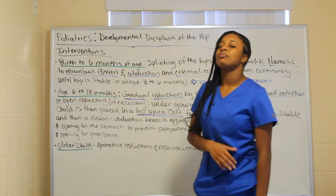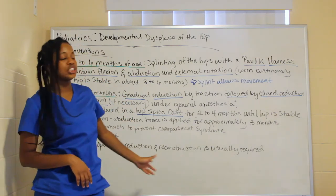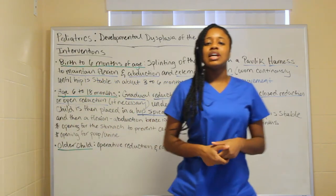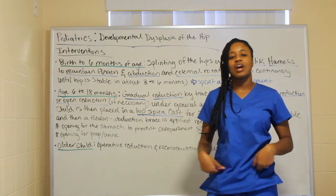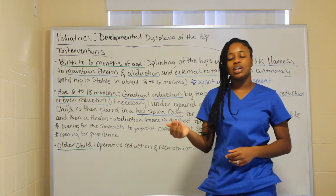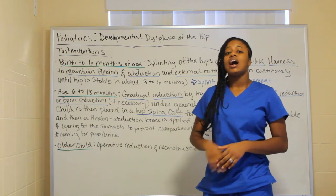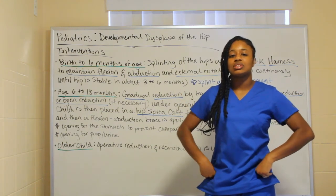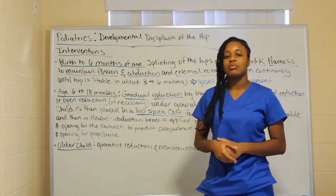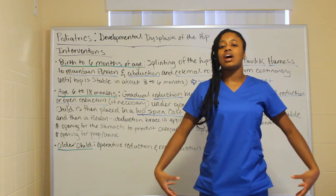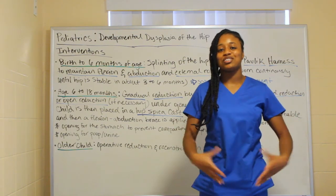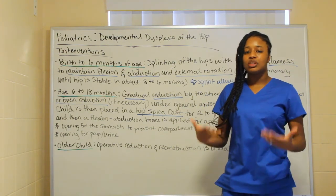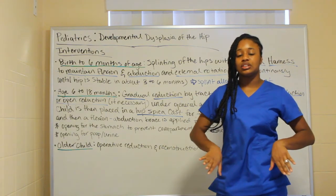In older children, surgical intervention will be required — an operative reduction and reconstruction. Similar to adult hip fracture or dislocation procedures, surgery is performed and post-operative care protocols are followed to prevent further complications or redislocation.